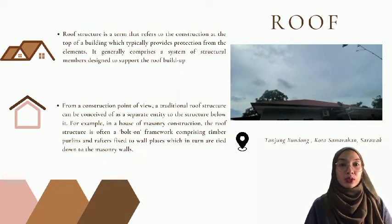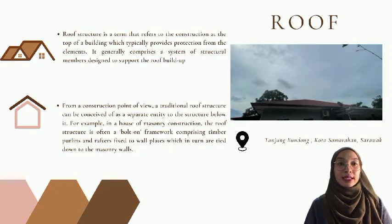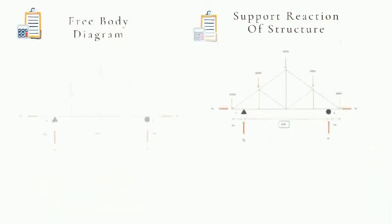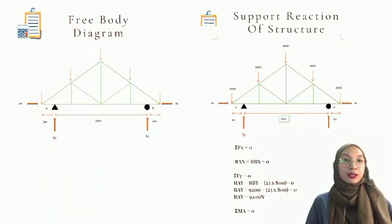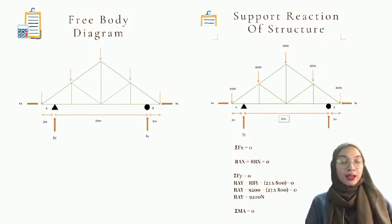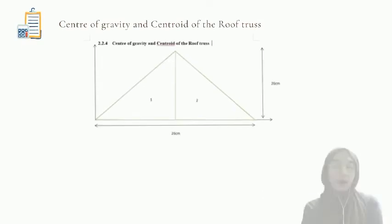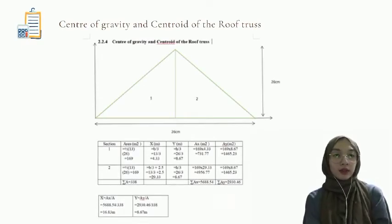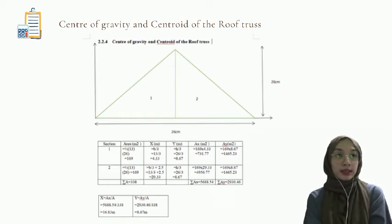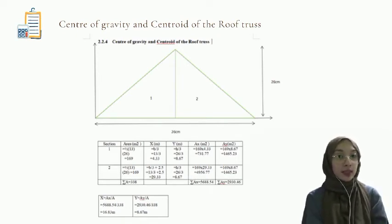This is our free body diagram, and this is our support reaction for the roof element. For the centroid calculation, height times width times length gives us 26 cm over 26 cm. We have also calculated the rational force and determined the forces inside the roof structure.